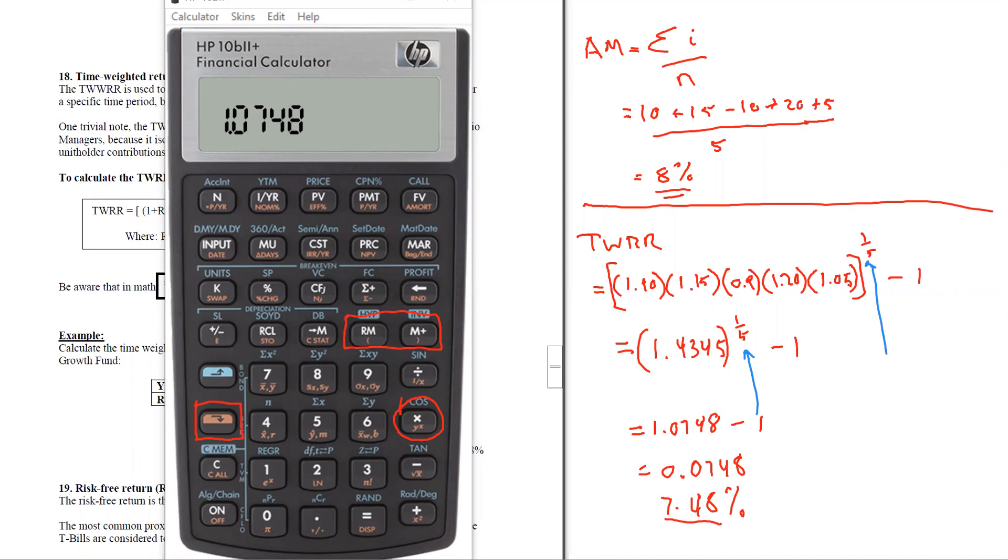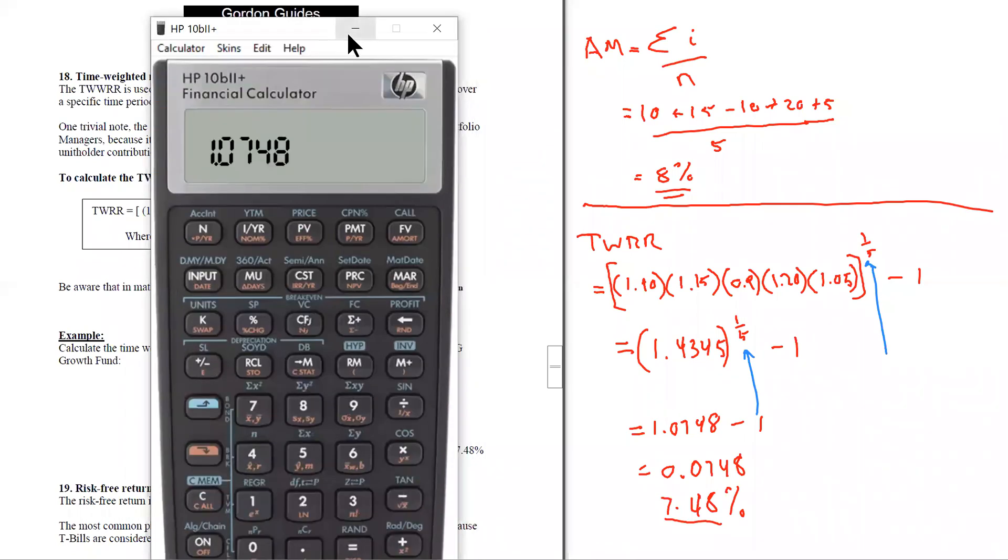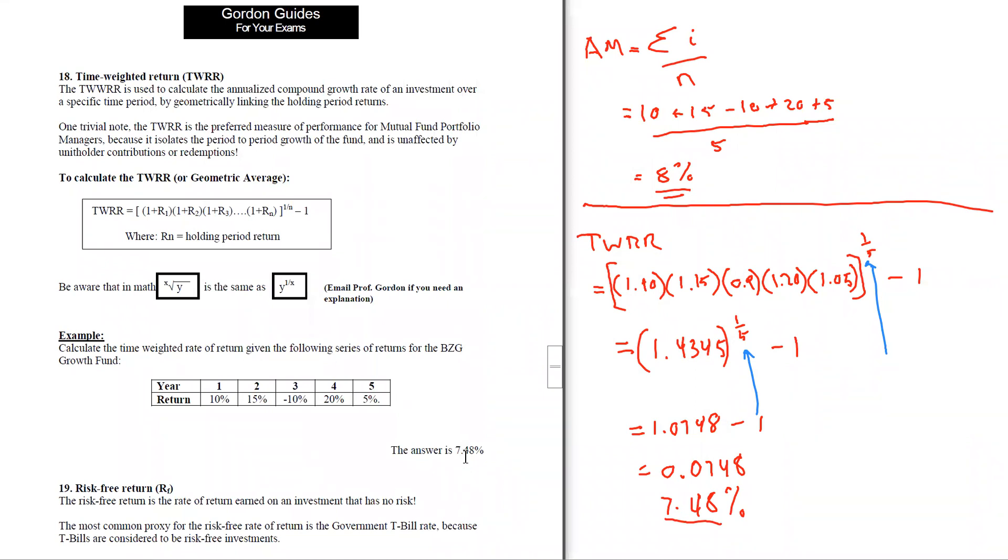I think that this is a quick way to do it using this calculator, and I think you should be ready to handle that kind of question. It may show up as a trivial kind of question, but there it is. Here's our answer, 7.48%. I hope you found this helpful and we'll end this here.